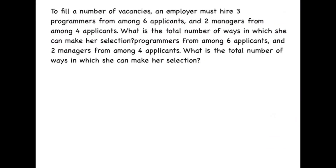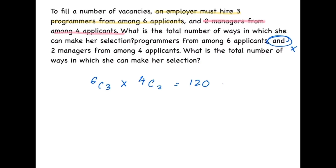To fill vacancies, an employer must hire 3 programmers from 6 applicants and 2 managers from 4 applicants. We use 6C3 times 4C2 — multiplication because it is AND. This gives us 120.